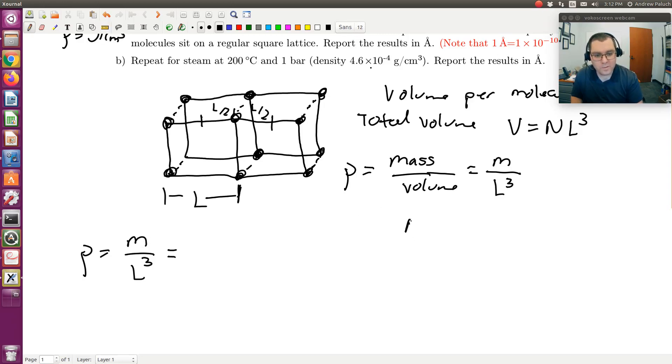Remember before, we said if I were to look up the molecular weight of water, molecular weight is going to have units of grams per mole. In this case, it's 18 grams per mole.